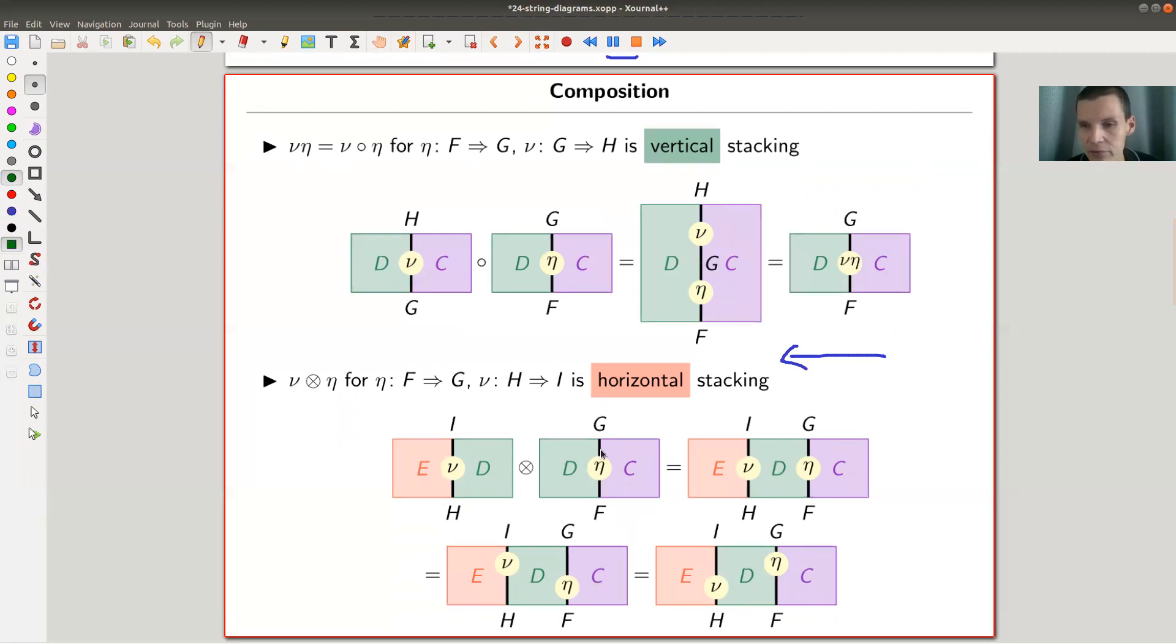Or compose natural transformations in two ways. So you could compose functors, and it's done by just stacking pictures. So here you have functors F and H. So F, let's say, goes from C to D and H goes from D to E.